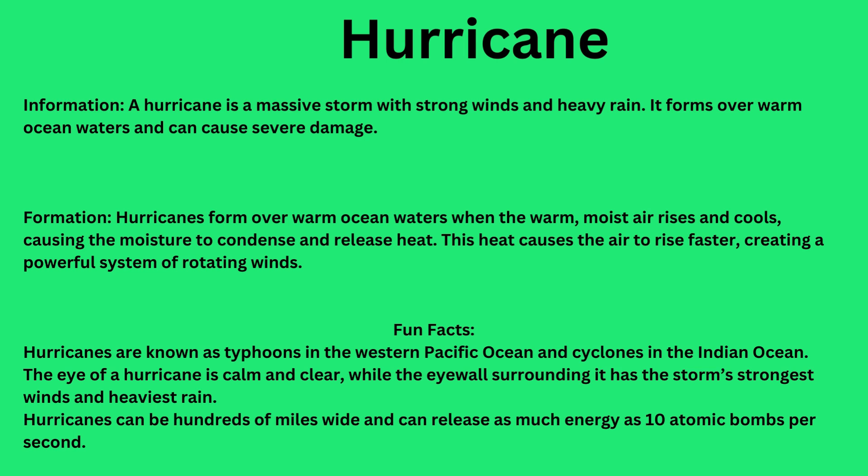Fun facts about hurricanes: Hurricanes are known as typhoons in the western Pacific Ocean and cyclones in the Indian Ocean. The eye of a hurricane is calm and clear, while the eye wall surrounding it has the storm's strongest winds and heaviest rain. Hurricanes can be hundreds of miles wide and can release as much energy as 10 atomic bombs per second.